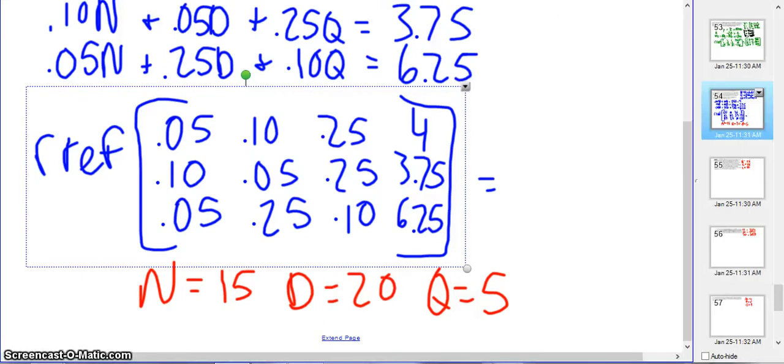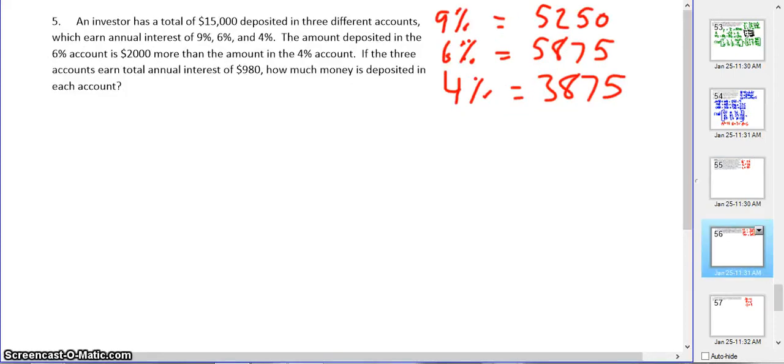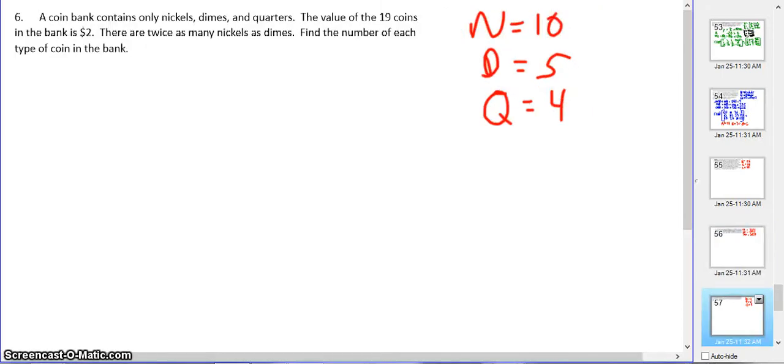You're going to try the next three questions. I put the answers there so you can check them once you're done. For number four, we have cots, blankets, and lanterns. Blankets cost $25, cots are $75, lanterns are $50. The 9% account should have $5,250, 6% should be $5,875, 4% should be $3,875. And then the last, number six, you should have 10 nickels, 5 dimes, and 4 quarters. So that way you can check your answer and you know you did it right.